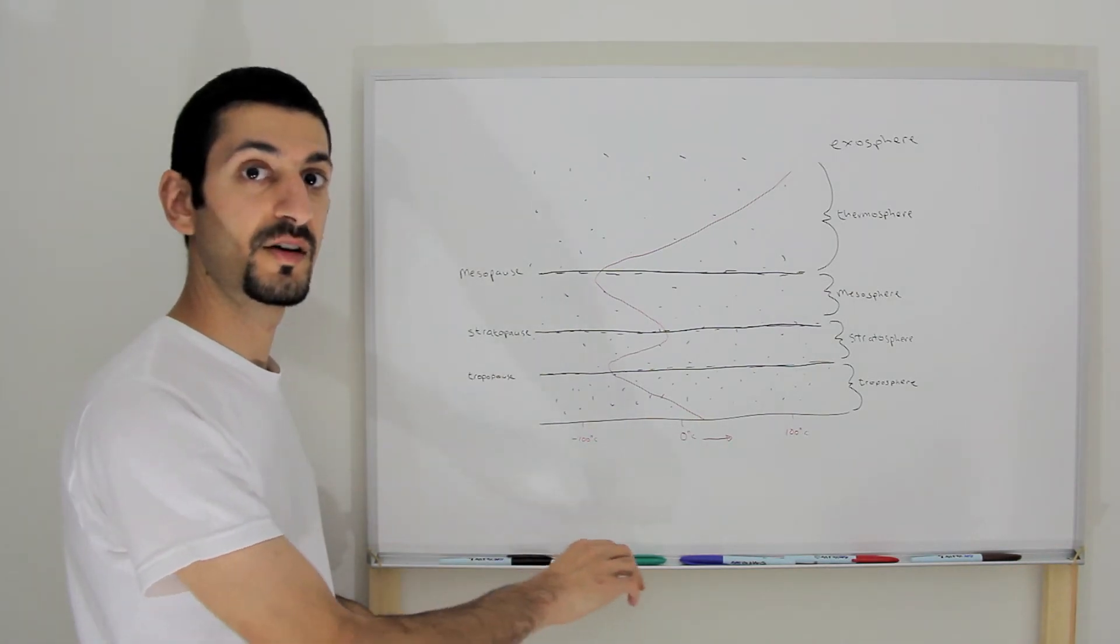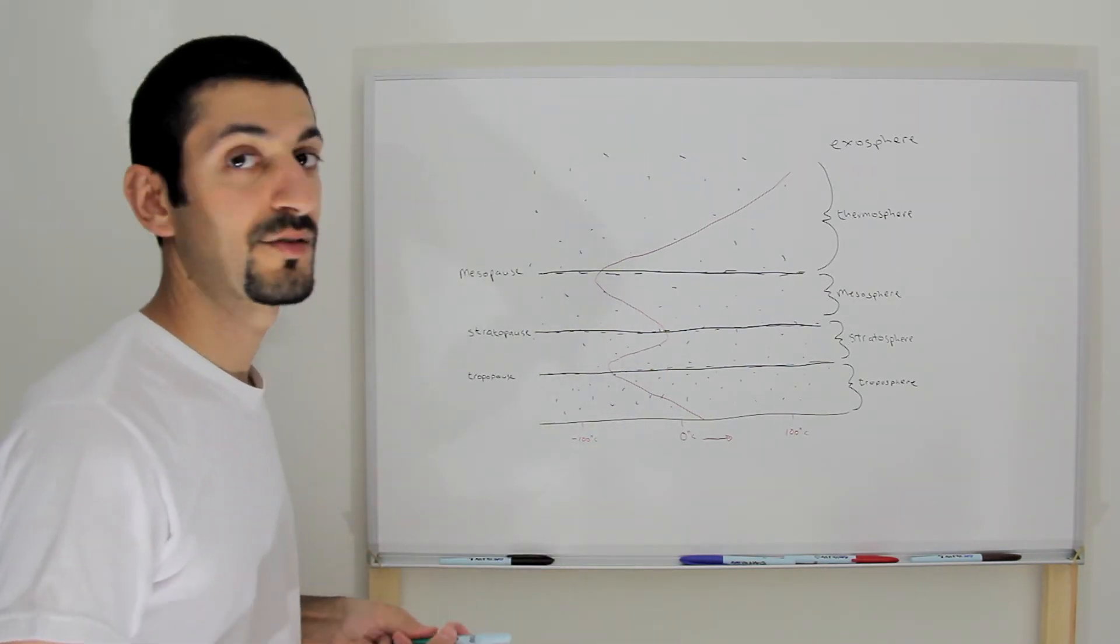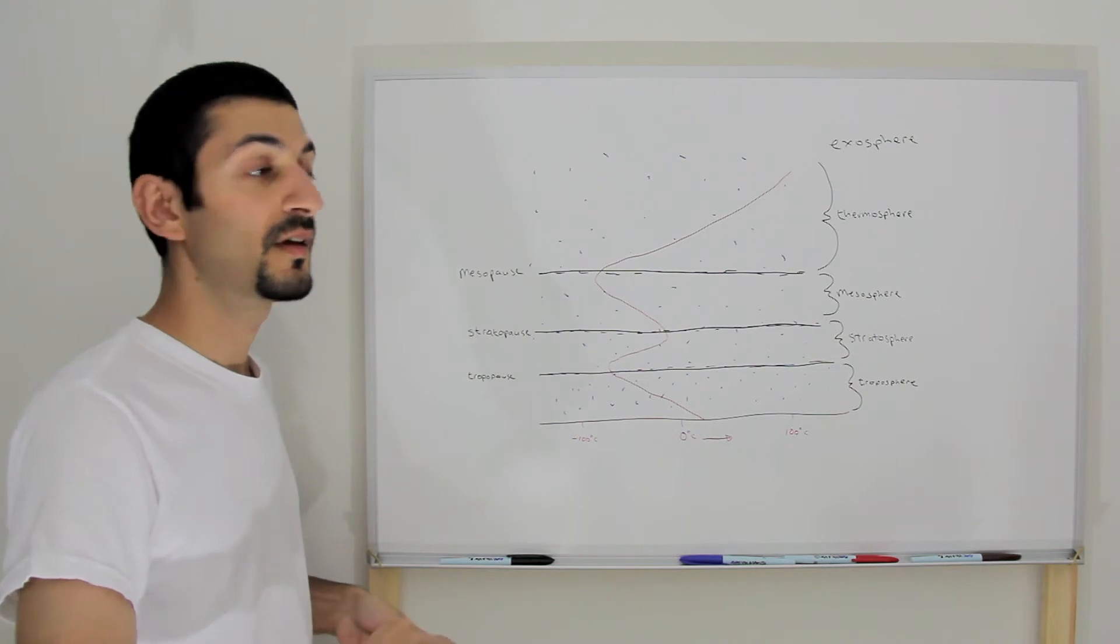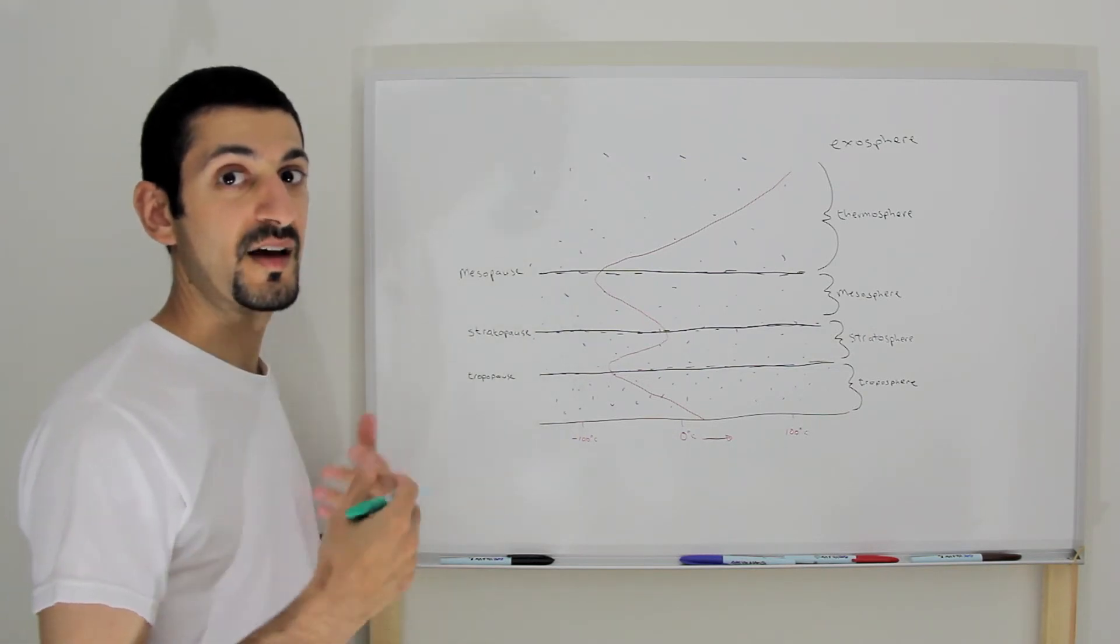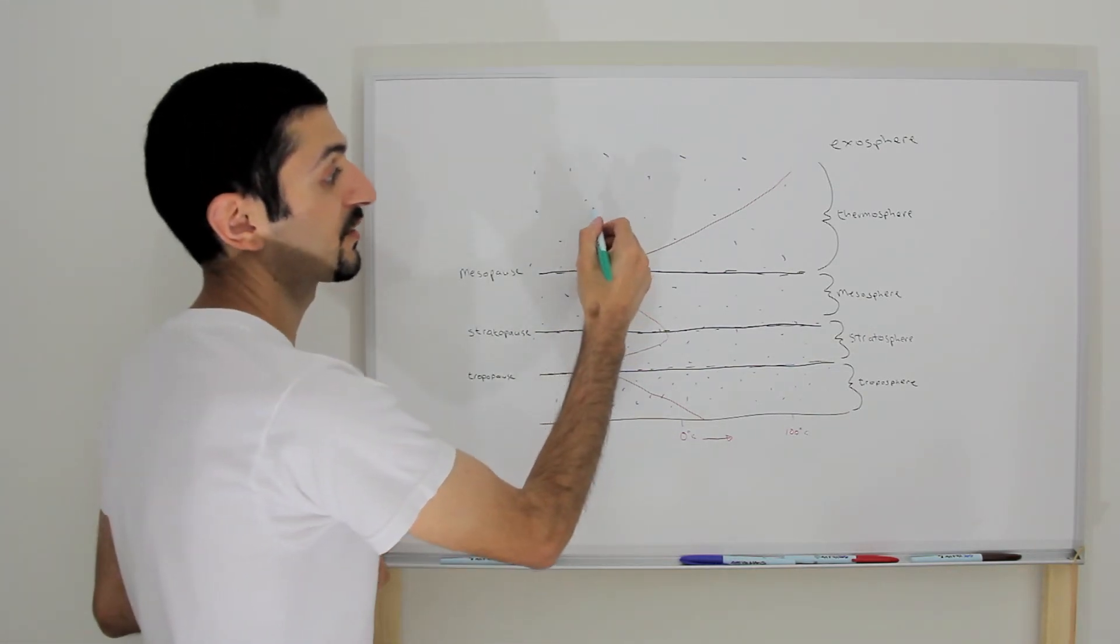Now, one other thing to note is that the thermosphere is sometimes referred to as the ionosphere, because auroras occur over here.